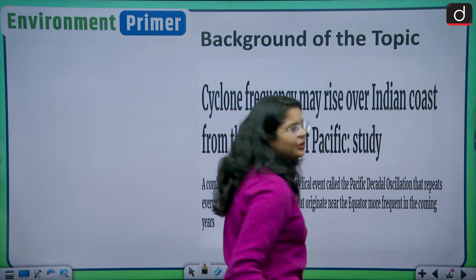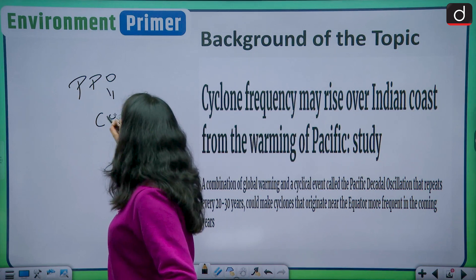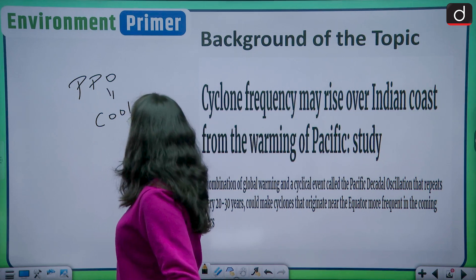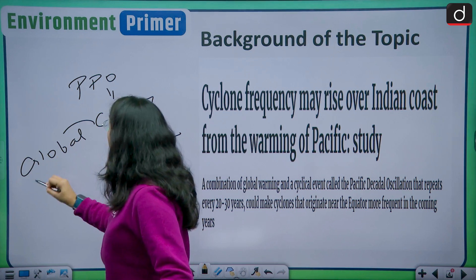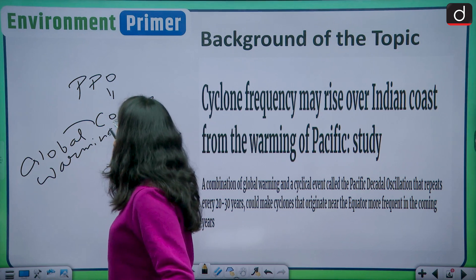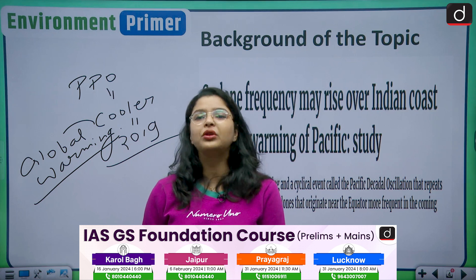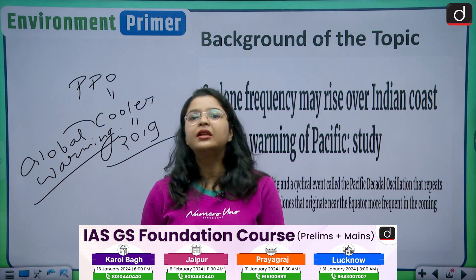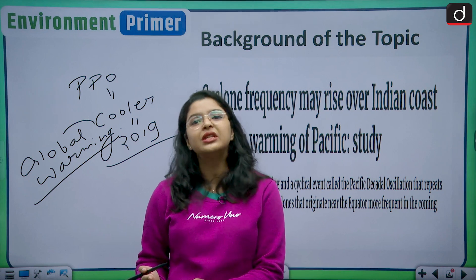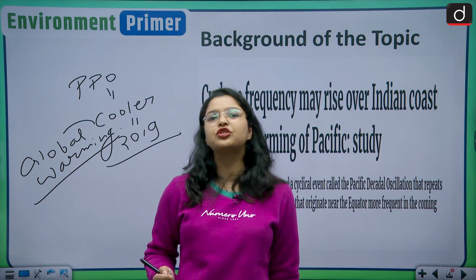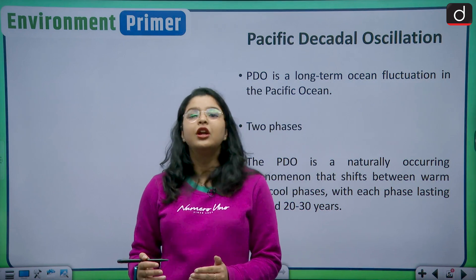The Pacific Decadal Oscillation, or PDO, has entered into its cooler phase since 2019, and this combined with global warming is definitely going to increase tropical cyclones around the equator. We will see an increased frequency of cyclones. This brings us to the central question of today's discussion: what is the phenomenon of the Pacific Decadal Oscillation?